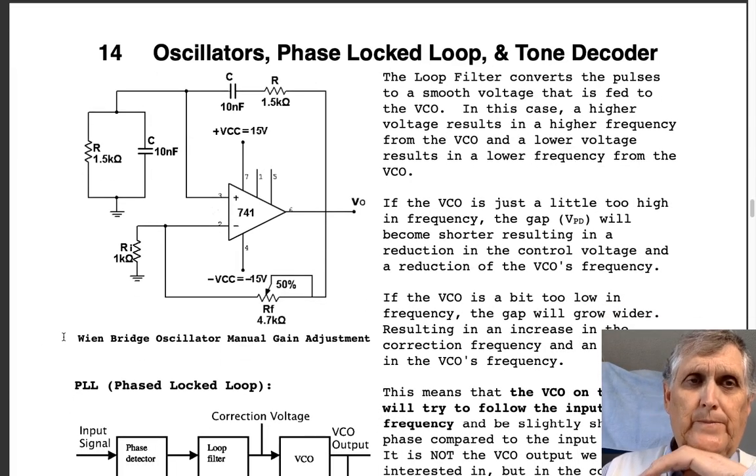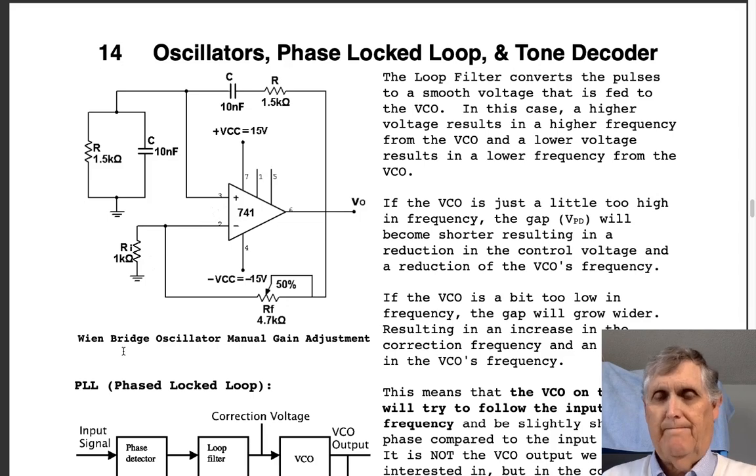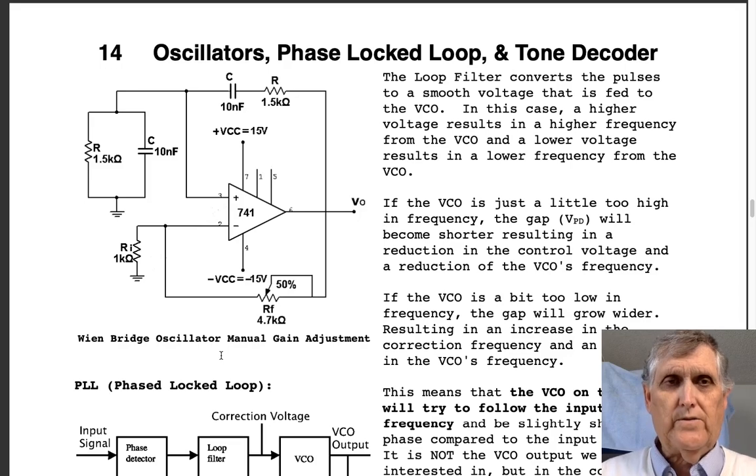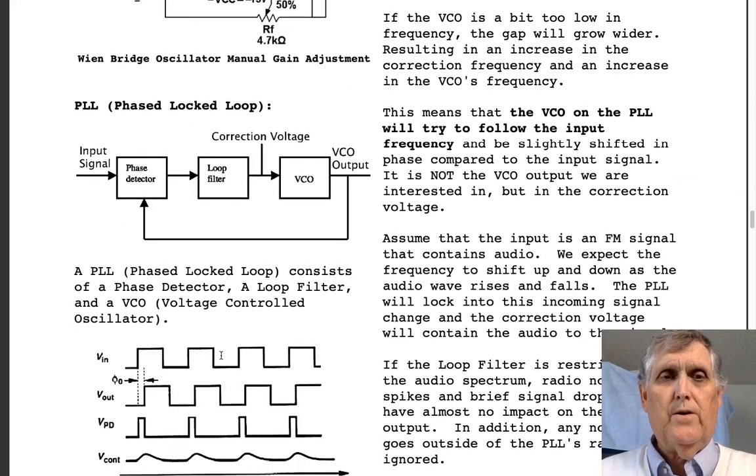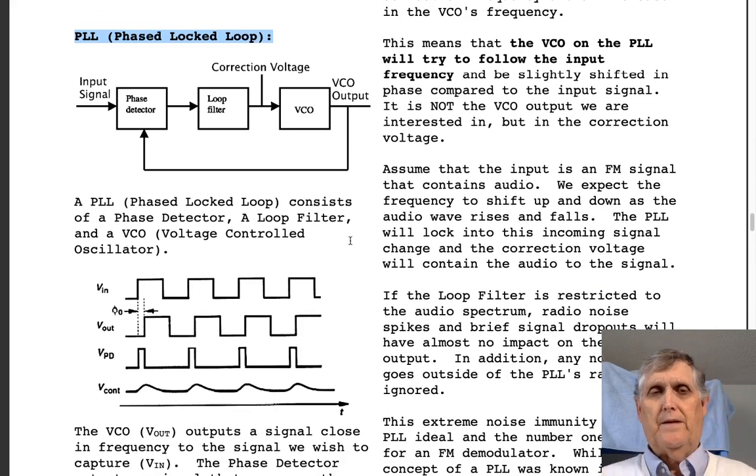It is possible to build a Wien bridge oscillator with a manual gain control. As we see here, you can sit there and adjust the pot and try to find that sweet spot where it'll oscillate just fine. Can be done. Normally we don't find this manual thing; people would rather have an automatic gain control. Last thing we're going to talk about, and this has been one of my favorites when I was going to college—I fell in love with these devices.